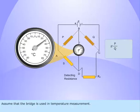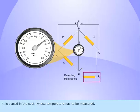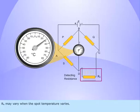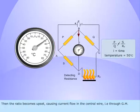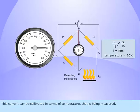Assume that the bridge is used in temperature measurement. Rx is placed in the spot whose temperature has to be measured. Rx may vary when the spot temperature varies. Then the ratio becomes upset, causing current flow in the current wire, i.e. through GM. This current can be calibrated in terms of temperature that is being measured.